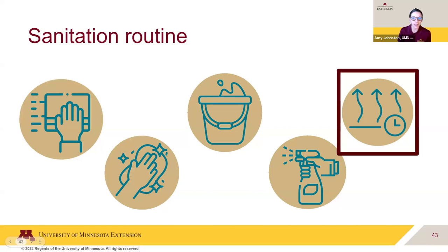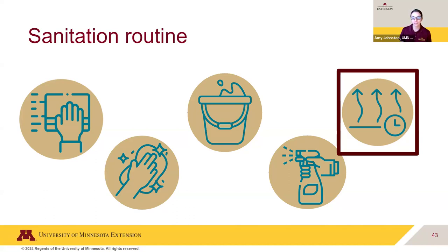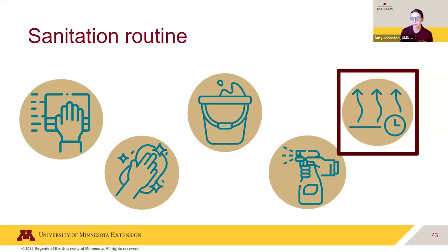Any questions about sanitizing before we go to our last step? One question came in: how do you make sure water is room temperature? A general easy way is, if you have one temperature control on your faucet, have it right there in the middle. If you have hot and cold, try to have those even. You can also simply take the temperature of the water — if you have a food thermometer at home, fill a glass, put your thermometer in, and wait 15 seconds. The temperature it reads would be the temperature of your water.